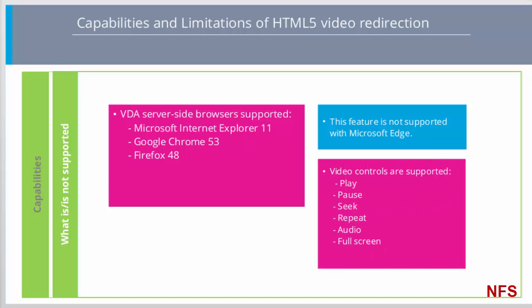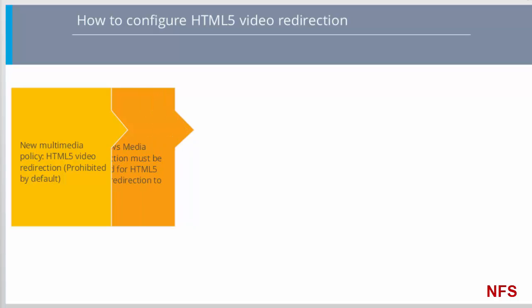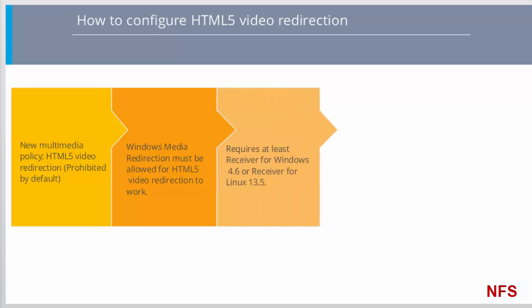The following video controls are supported: Play, Pause, Seek, Repeat, Audio, and Fullscreen. This feature is controlled by a new multimedia policy setting, HTML5 Video Redirection, which is not enabled by default, so this needs to be set to Allowed. In addition, the HDX policy Windows Media Redirection must also be set to Allowed for HTML5 video redirection to work. On the client side, Citrix Receiver for Windows 4.6 or higher is required, or Citrix Receiver for Linux 13.5 or higher.